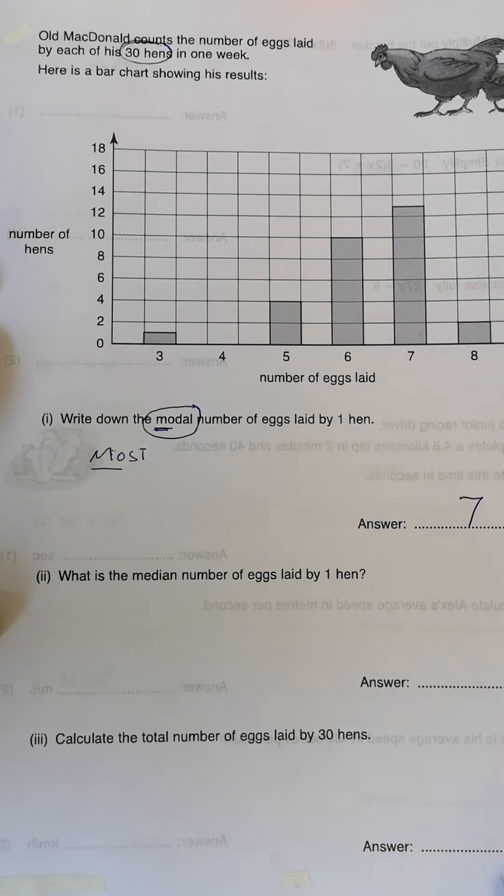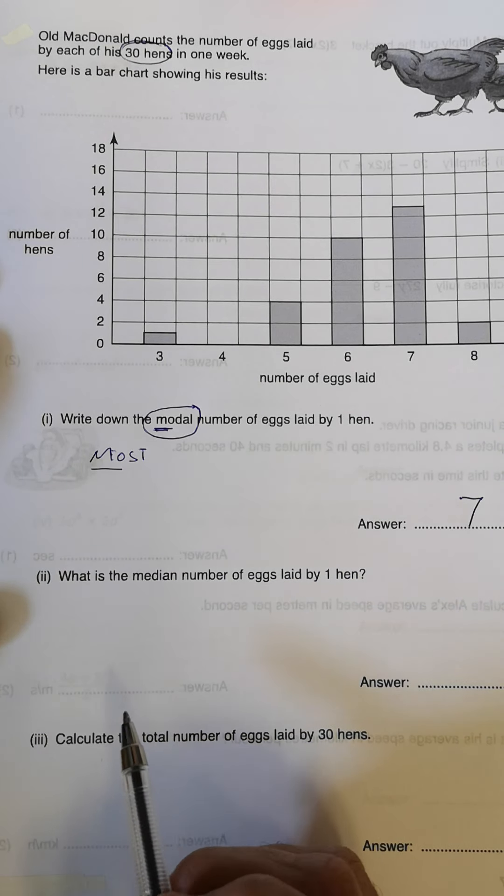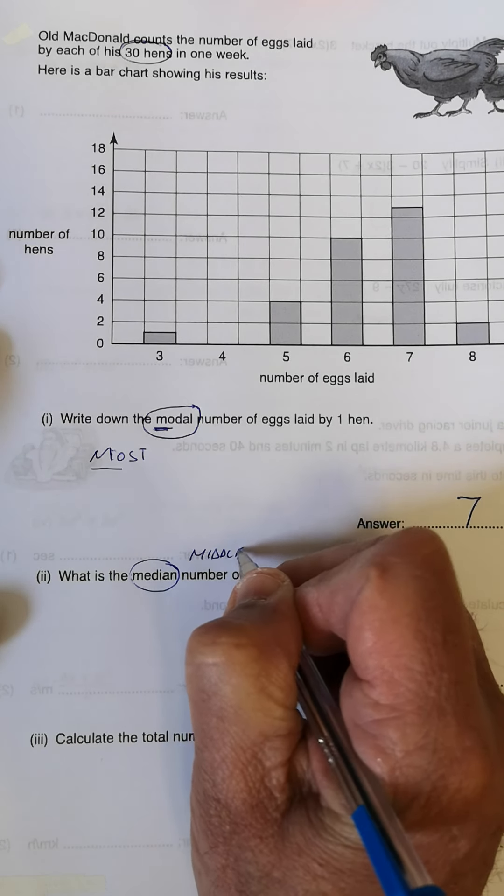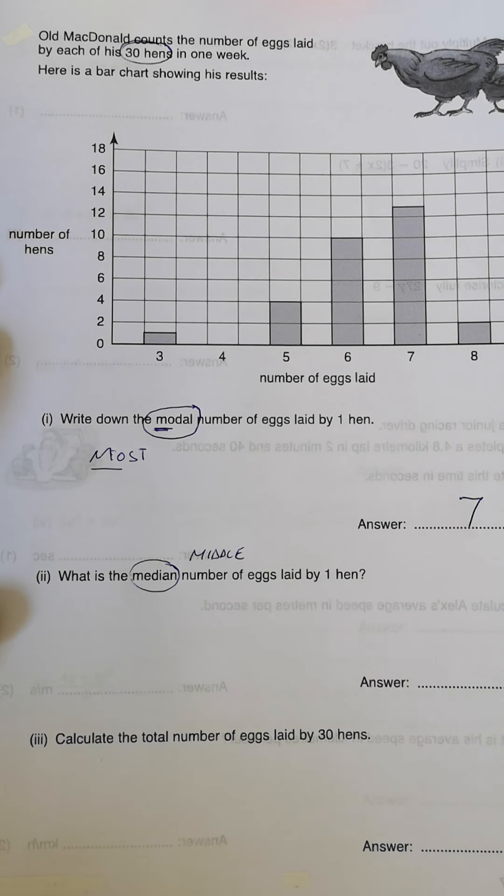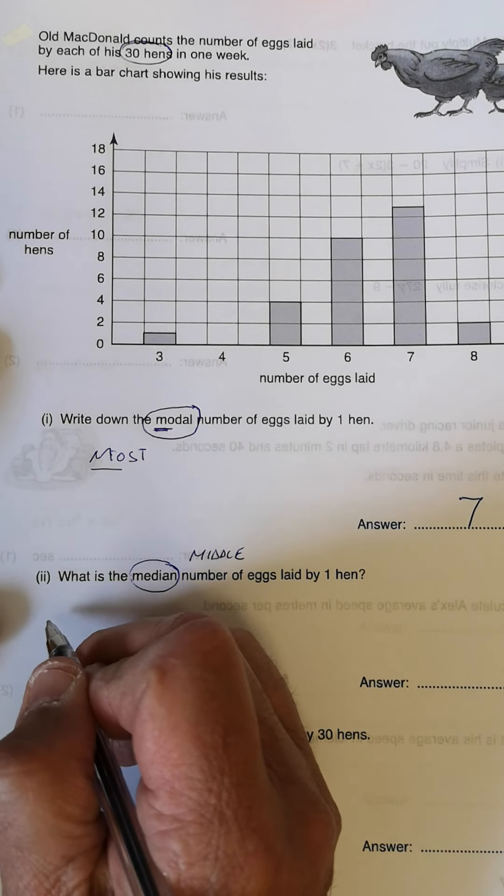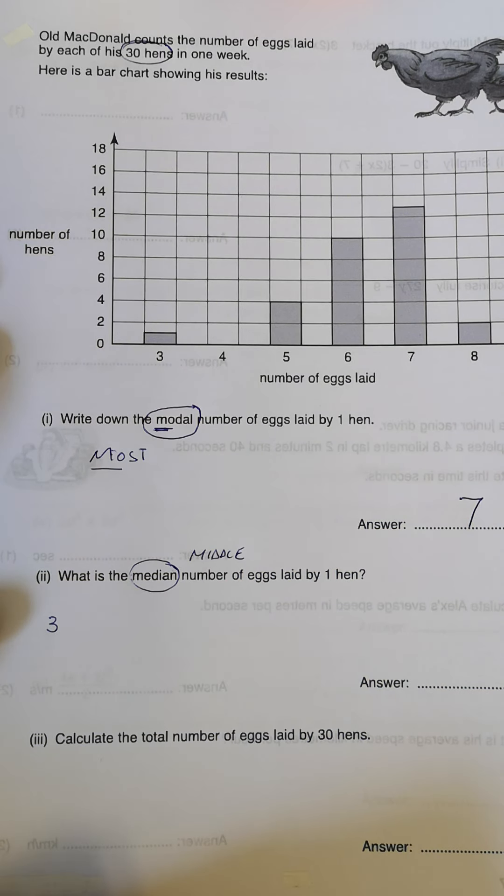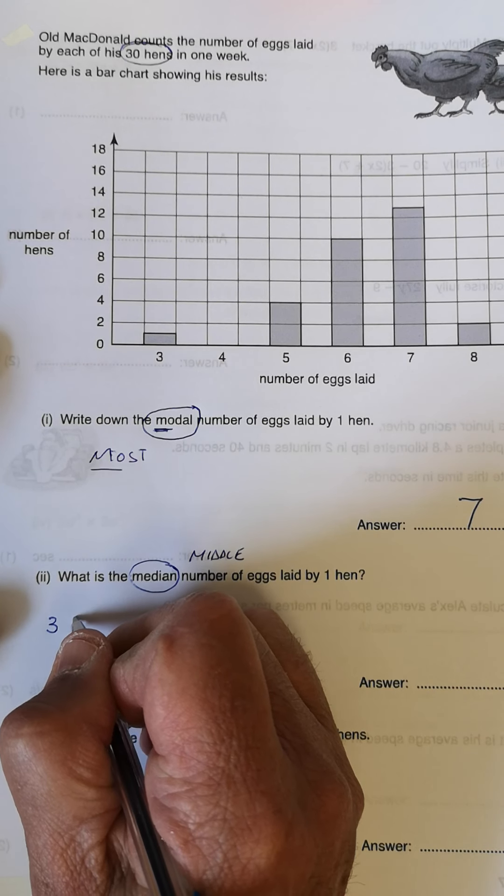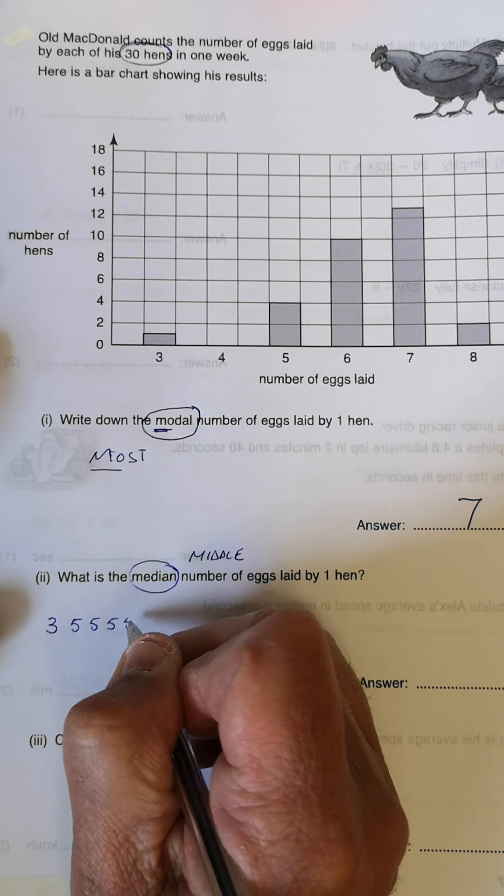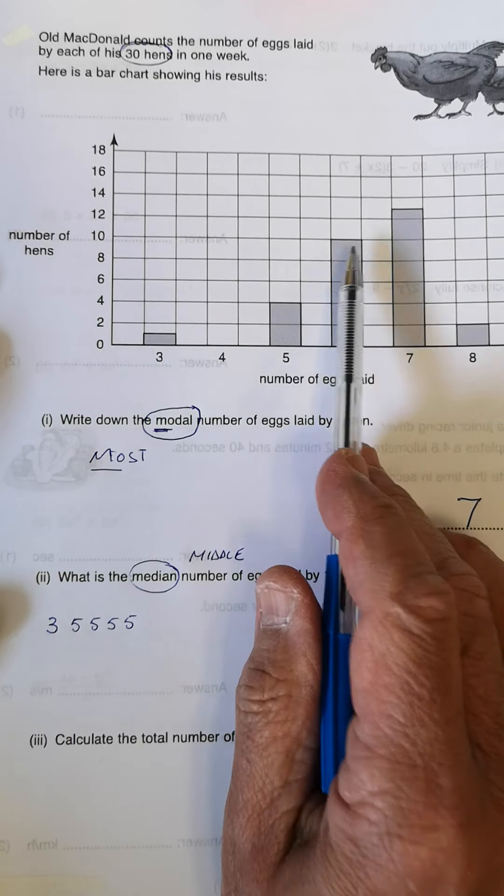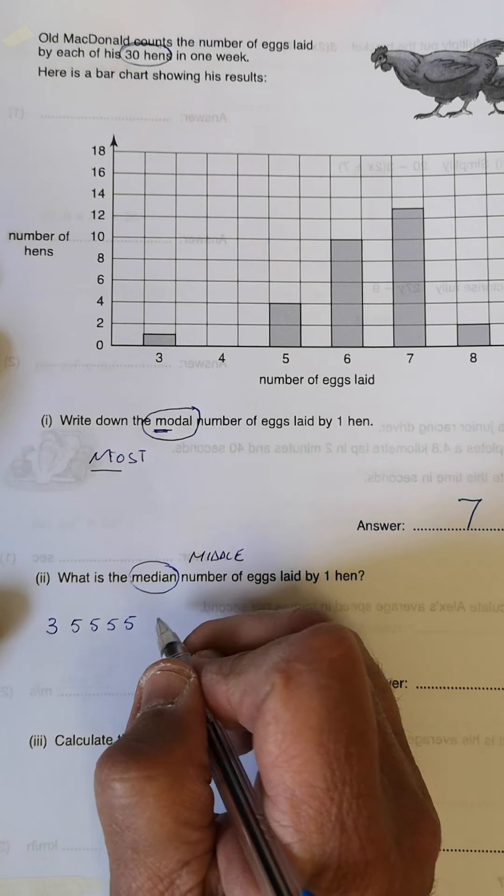Now the next question can be a little bit painful because you've now got to write out quite a lot of numbers. What is the median number of eggs laid by one hen? Median. Then we're going to find the middle number, the median number of eggs. So in this case, remember, one hen laid three. So what do we write down? We write down three. The next one. We have four hens laying five. So write out five four times. And in this instance, we're going to have ten hens laying six. So write out six ten times.